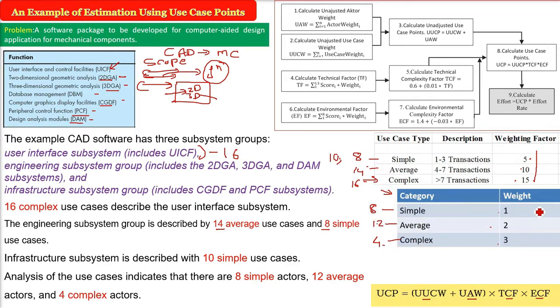Now how do we compute what will be the final value of UUCW and UAW? Let us see. We multiply with the weight factor and then we add. 8 into 1, 12 into 2 and 4 into 3, then we add. So first one value will be UUCW. Second value will be UAW. Let me show it here. Now as I said, how much values were there? We just discussed. So the complex were 16 use cases.